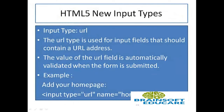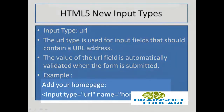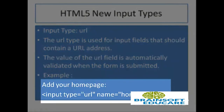Last but not the least is the input type URL. URL type is used for input fields that should contain a valid URL address. URL stands for Uniform Resource Locator, so basically it is a web resource. The value of the URL field is automatically validated when the form is submitted, and it takes the input type of URL.